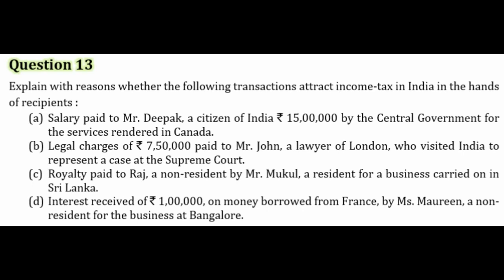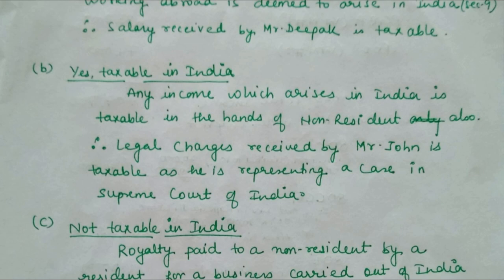Coming to Part B, which says legal charges of rupees 7.5 lakh paid to Mr. John, a lawyer of London, who visited India to represent a case at the Supreme Court. So here is a non-resident — Mr. John, he resides in London, but he is coming to fight a case and represent his clients in Supreme Court. Where is he rendering his services? He is rendering his services in an Indian court — that is the reason this income is arising in India. Chahe non-resident ho ya resident ho, koi bhi income agar India mein arise hoti hai, that is taxable in India.